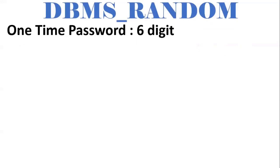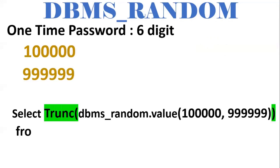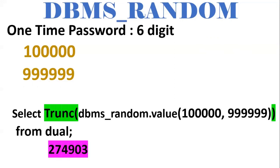We know that OTP is a one-time password and it is a 6-digit number. So we need to give the range as 1,00,000 to 9,99,999. Within this range, a value should be generated. Every time we execute this query, a random value will be generated.